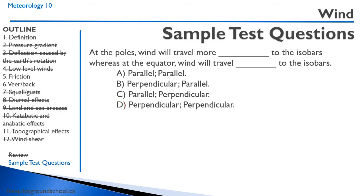At the poles, wind will travel more blank to the isobars, whereas at the equator, wind will travel blank to the isobars. At the poles, Coriolis force is more predominant, so wind is more parallel to the isobars. At the equator, wind goes directly from high pressure to low pressure regions — so perpendicular. The answer is C: parallel and perpendicular.